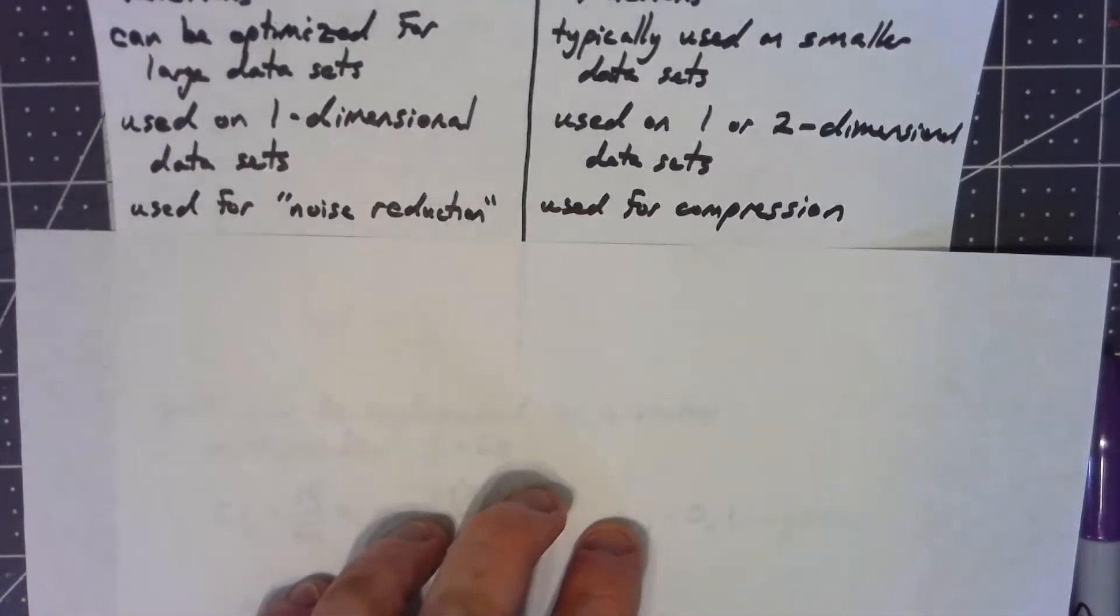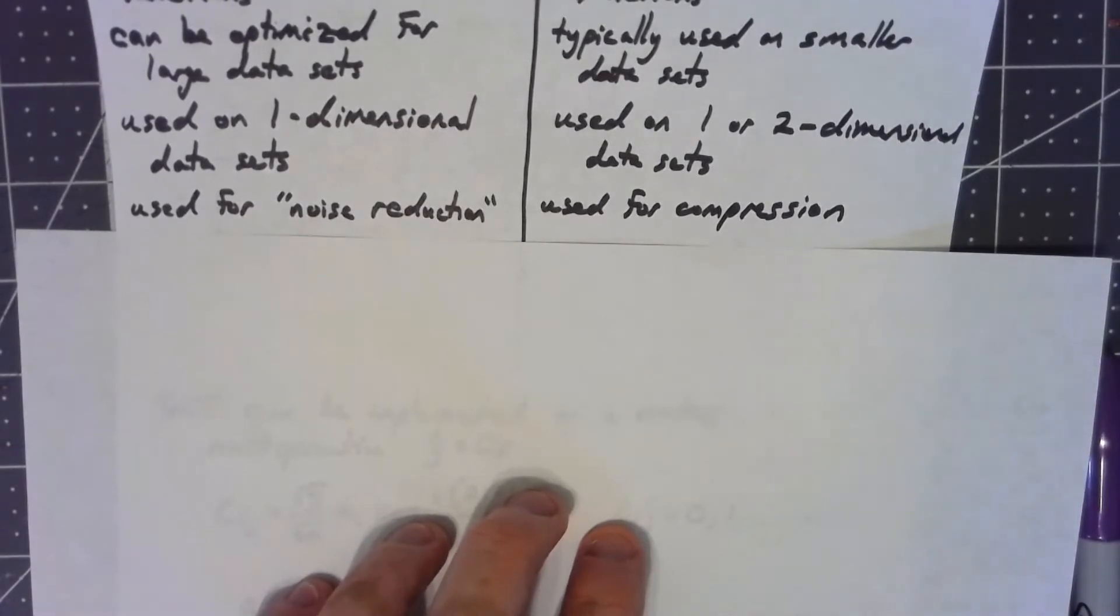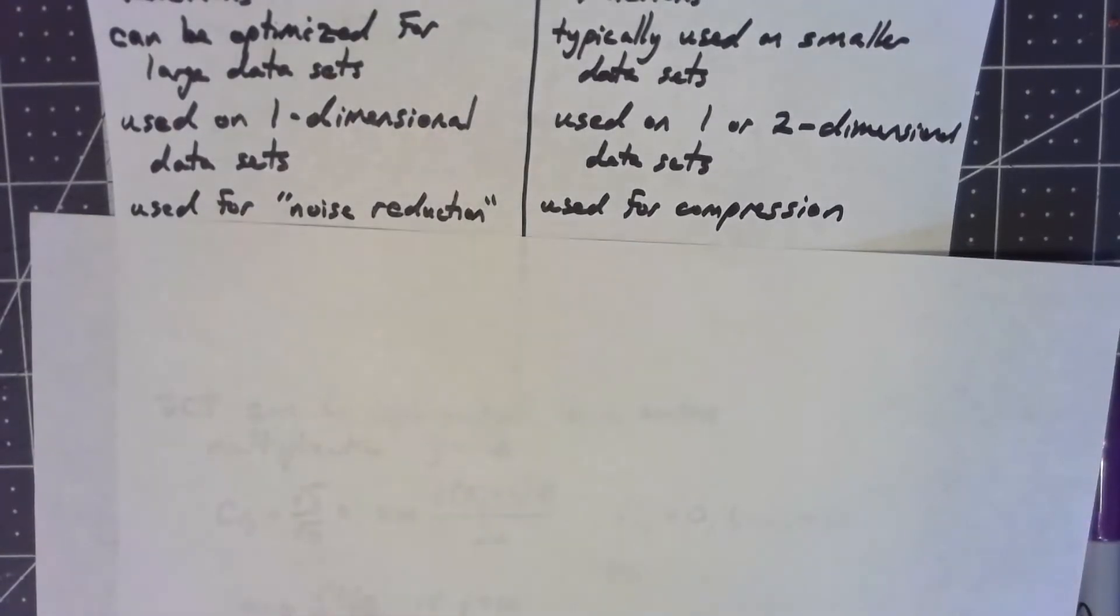On the other hand, the types of uses we tend to use the discrete cosine for, there isn't noise. The data tends to be, at the start, perfect. And what we end up doing is instead of trying to get rid of extra junk that's not supposed to be there, we actually kind of get rid of junk that is supposed to be there. We sort of have a lossy compression. We say, maybe we don't need it to be exact. Maybe we can give an approximation and take far less room for what that data is.